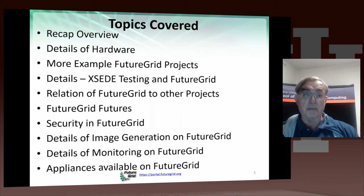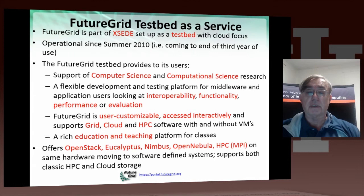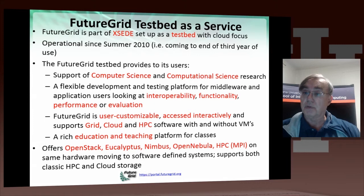First, the recap of the overview. These slides are just a few from the overview, setting the scene for FutureGrid — an overview of FutureGrid Testbed as a Service. FutureGrid is part of the NSF Exceeds system, which is a set of resources around the country. Unlike most of those resources, it is not a production system but rather a Testbed. Its focus is clouds, although it also supports HPC and grids, because you need all of those to build systems. Comparison of clouds and HPC, for example, is an important capability that FutureGrid offers.